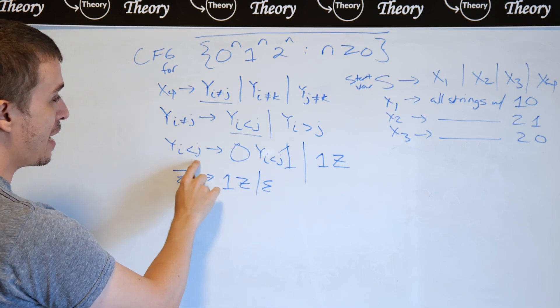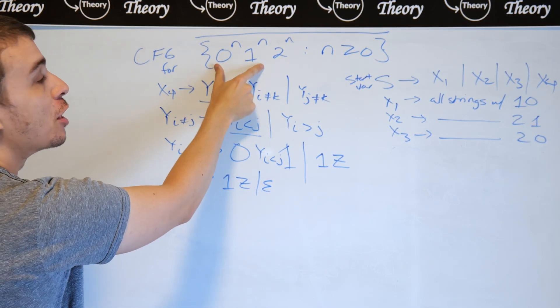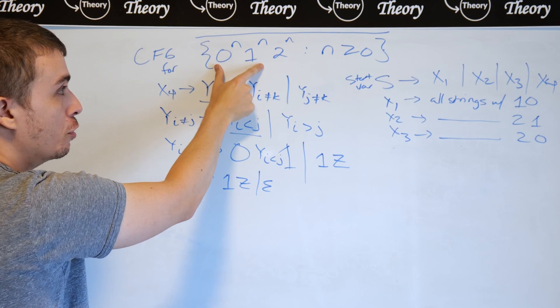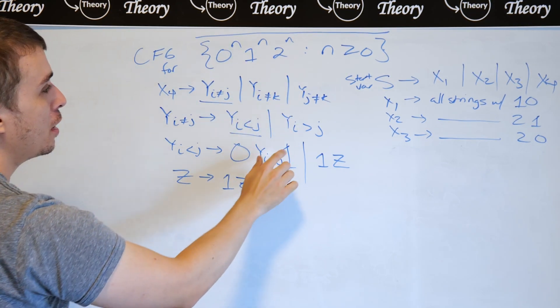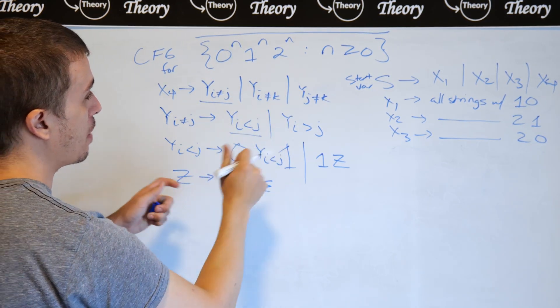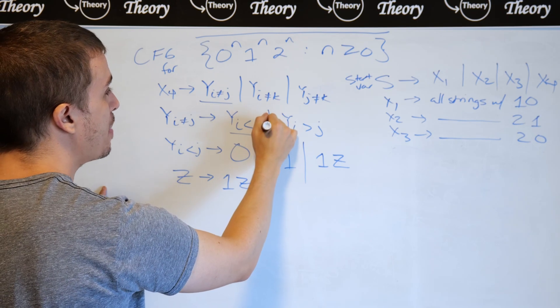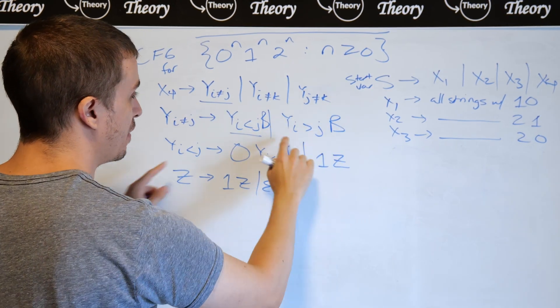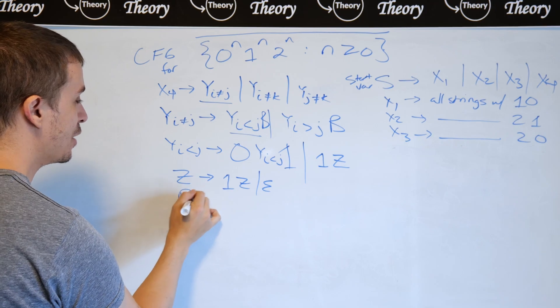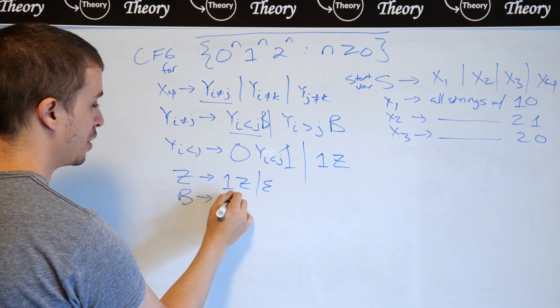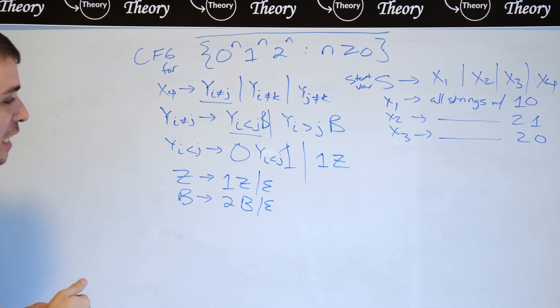And so therefore, y i less than j makes this original part of the string without the twos, but in order to get the twos, we can just stick a different variable right here. I'm going to call it b on both ends of right here. And then b is just going to spout off as many twos as it wants. So it's effectively what z does, but just for twos.